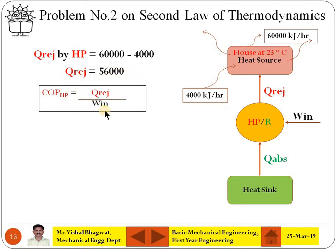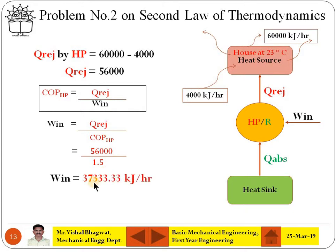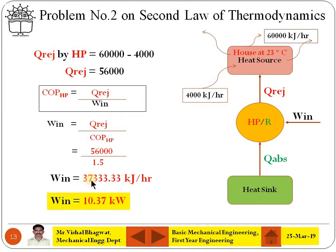From this equation, you can easily work out the work input. Work input equals Q_rejected divided by COP of heat pump, which is 56,000 divided by 1.5, giving 37,333.33 kJ per hour. This is the work input to the heat pump. Converting to kilowatts, 37,333.33 divided by 3,600 seconds gives 10.37 kW work input.